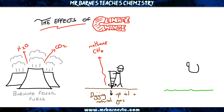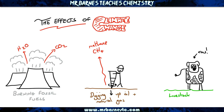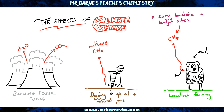You also get methane from livestock farming — in particular cattle, cows. They have bacteria in their stomachs used to digest tough grass, and when they do that they produce methane. The more cattle you have, the more methane given off, the bigger the effect on climate change. There's also bacteria in landfill sites which produces methane, also leading to climate change.